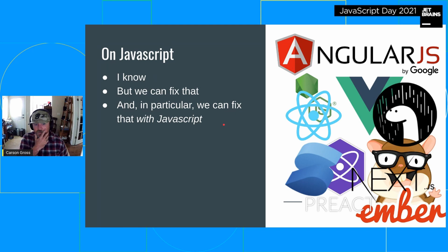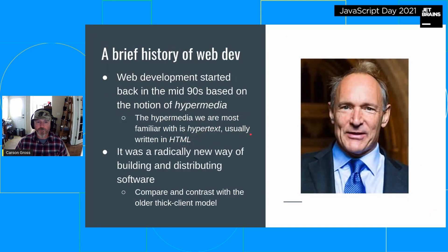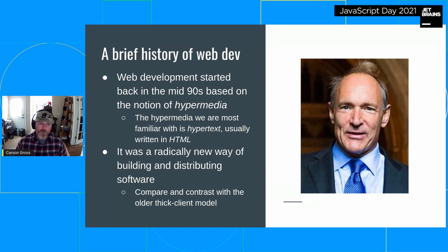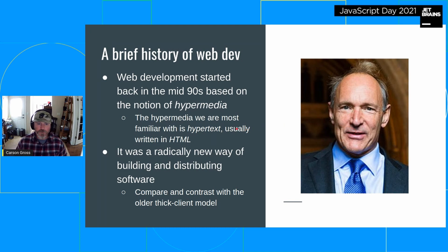But it turns out we can fix it. In particular, we can fix it with JavaScript. So let's do a brief history of the web. Web development started in the late 1990s and was based on this notion of hypermedia — a new concept, not new in general, but new in broad adoption. HTML is the hypermedia we work in for the most part, and this was a radically new way of building and distributing software.